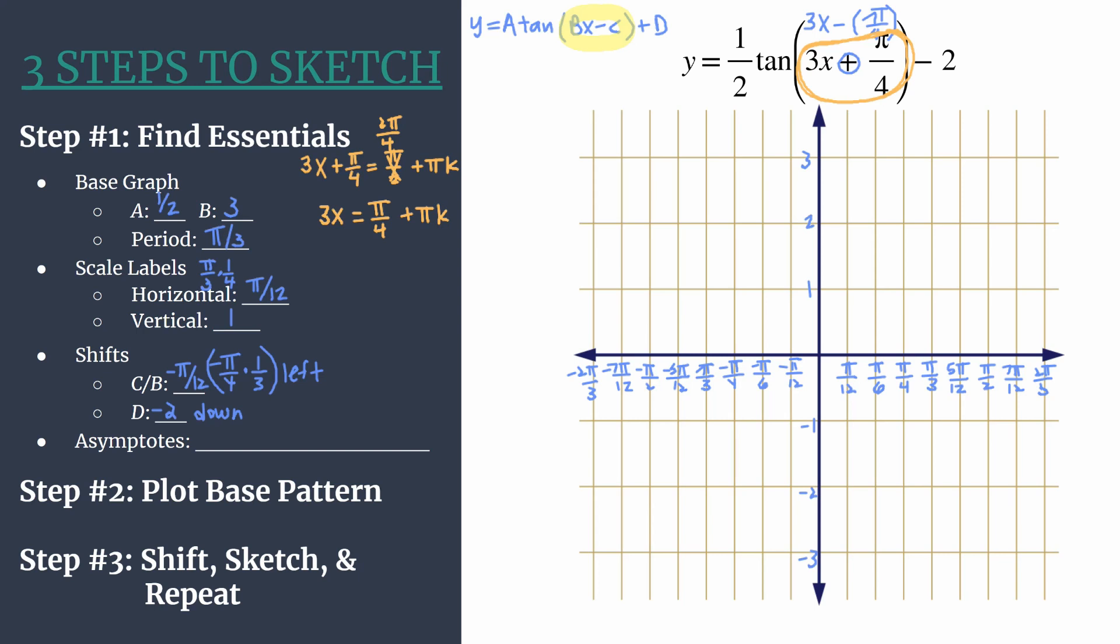Now we just need to divide both sides of the equation by 3. That'll isolate our x. Remember when you do divide, make sure you divide every term by 3. Let's write that in our asymptotes equation. We have x equals π/12 plus π/3 k. When you get your final asymptotes equation, the plus something k term should always be plus your period k, and ours is, so we should feel confident about that.